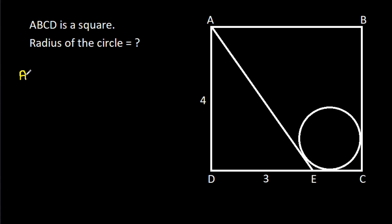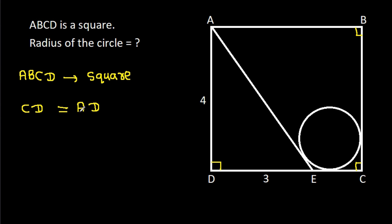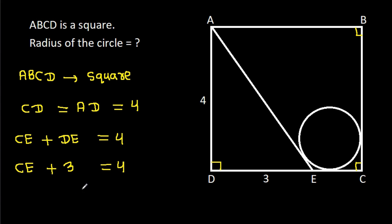ABCD is a square, that means these angles will be 90 degrees. Also, CD will be equal to AD, and AD is 4. And CD is CE plus DE, which is 4. Since DE is 3, CE will be 4 minus 3, that will be 1. So CE is 1.